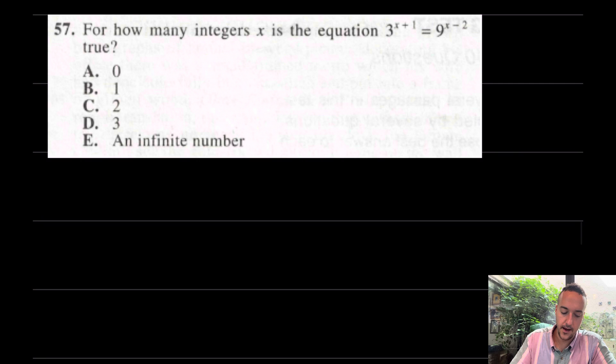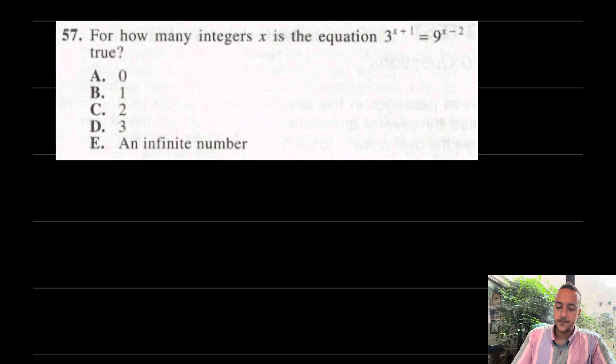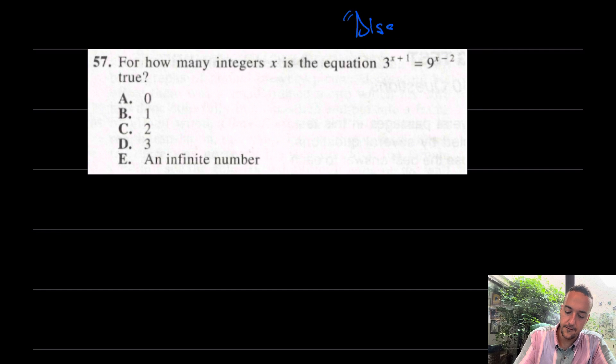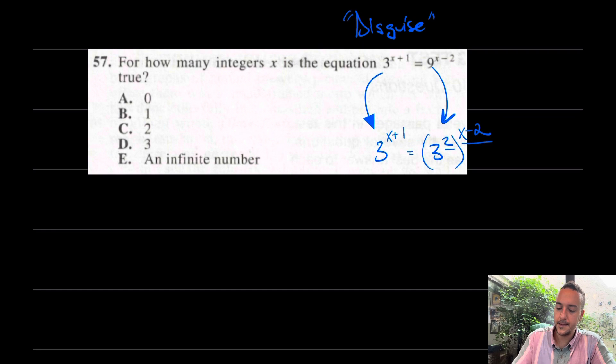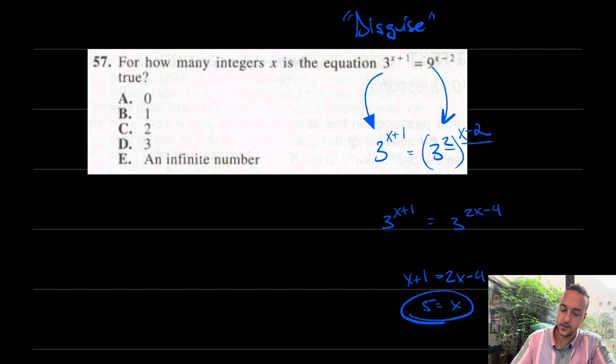All right. Last question of the day is right here at 57. This is kind of a tricky one, but not for us, because we know that skill of disguise. If they're giving us a juicy number like 3, I wonder what they want us to do. We have 3 to the X plus 1 equals, wait a second, 9? Is 9 really 9 here? I don't think so. I actually think 9 is 3 to the 2nd to the X minus 2. And at that point, power of a power, I have 3 to the X plus 1 equals 3 to the 2X minus 4. Power of a power, you multiply. And we're almost done. X plus 1 equals 2X minus 4. And at that point, what can we do? We can just solve. This would be 5 equals X, and the answer is X equals 5.